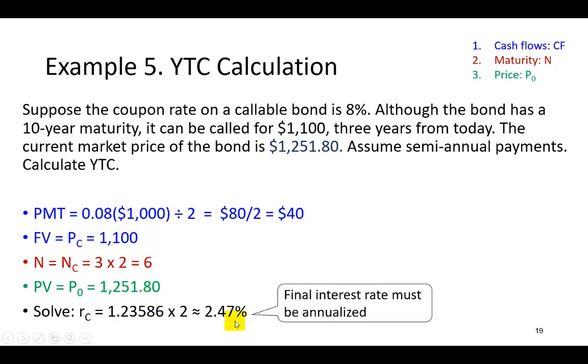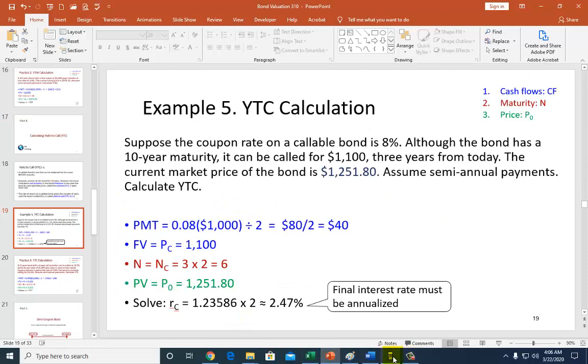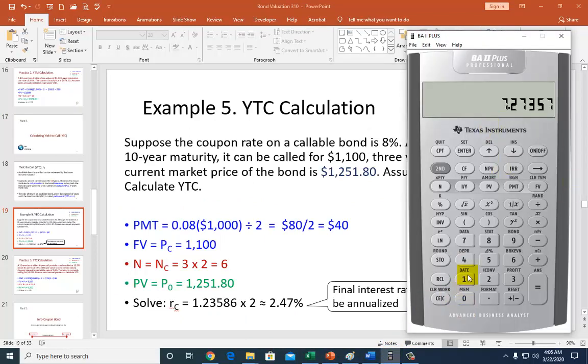So here's my BA2+. I clear the screen first of all, and then I'm going to have to clear TVM and clear work. Both of which are second functions. So second, clear TVM, second, clear work.